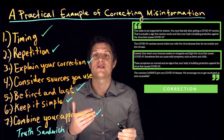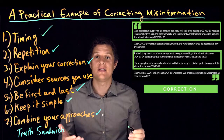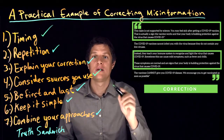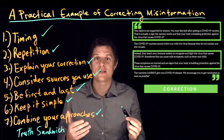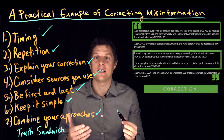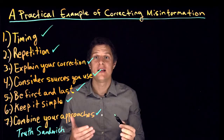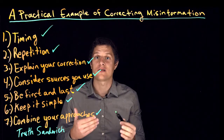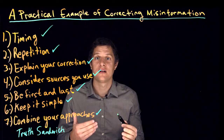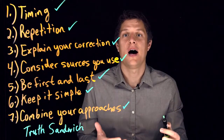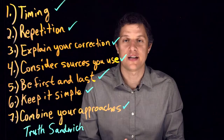You can improve your misinformation correction by timing it right — this means correcting the information as quickly as possible. In addition, provide a credible source explaining why the vaccines cannot give you COVID-19. Ideally, this source should be one that the target audience trusts, perhaps even a source who was once skeptical about the vaccines.